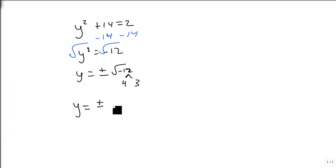Now, what if we have y squared plus 14 equals 2? Same thing. We subtract. Get the y squared by itself. Y squared equals minus 12. We take the square root of both sides. We get y equals plus or minus the square root of minus 12. 12 is 4 and 3. The minus means we're going to get an i. So our final answer is y equals plus or minus 2i square root of 3.